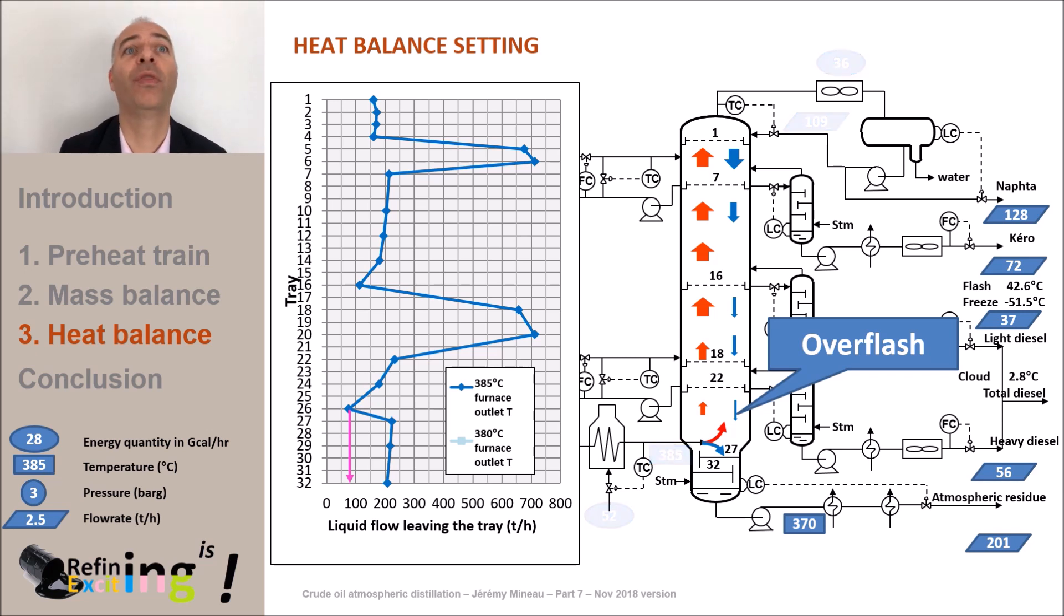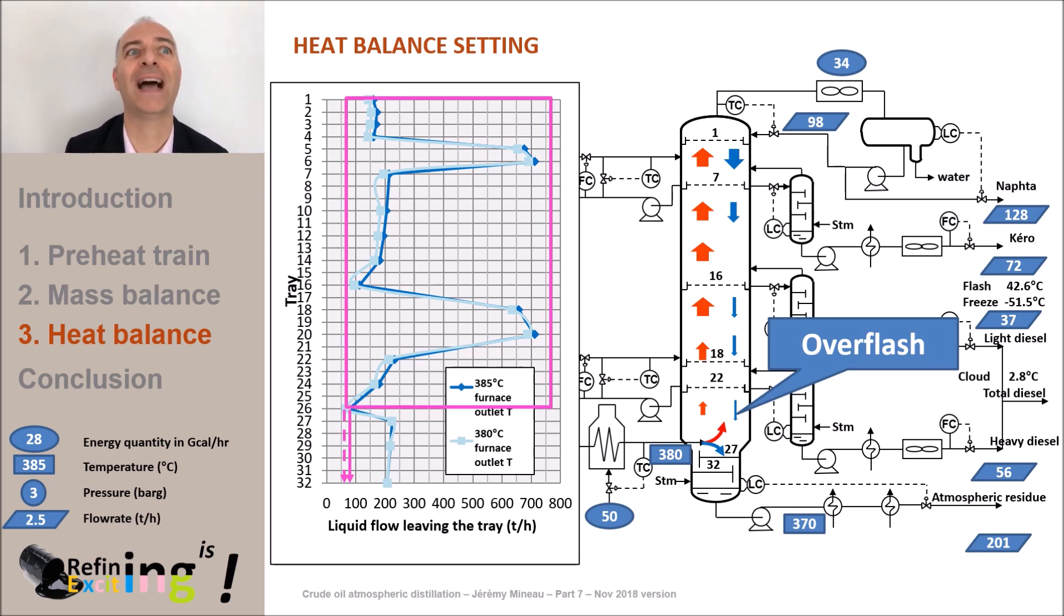Let's lower this temperature to 380 for example. When this temperature is lowered by 5 degrees C, the overflash decreases to 68 tons an hour and all the properties of the products are affected. Since, as we can see in the graph, the liquid vapor traffic has been modified in the zones above the feed tray. The kerosene flash point drops by 0.4 degrees C and the cloud point of the diesel increases by 0.1 degrees C.